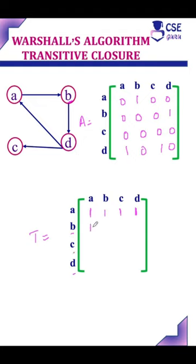For vertex b: b to a has a path through d, b to b has a path through d and a, b to c has a path through d, and b to d has a direct path.